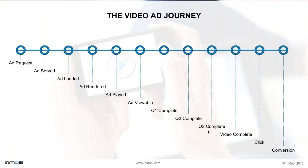Depending on the video experience, the user may be given a call to action through a button throughout the video or on an end card after the video completes or is skipped. If the user clicks on this, it contributes towards the click-through rate. Once the user clicks, they are taken to the advertiser's landing page, where they may need to take further action like filling out a form, installing an app, or perusing the web page. For performance advertisers, the KPI is how many unique users actually convert and complete this last action. Abhishek will walk you through the different types of attribution later in the session.